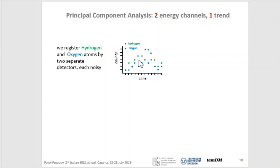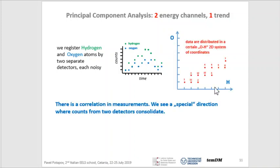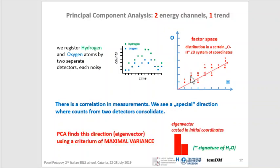Let's plot a joint distribution of both detectors — like that. Here are hydrogen clicks, here are oxygen clicks, and points are joint events. Note that time is excluded from that plot — only hydrogen and oxygen coordinates. Let's call such a space the factor space. And immediately we see that there is a special direction here: a direction where counts from oxygen and hydrogen consolidate. PCA finds such a special direction — let's call it an eigenvector — with the criterion of maximum data variance.